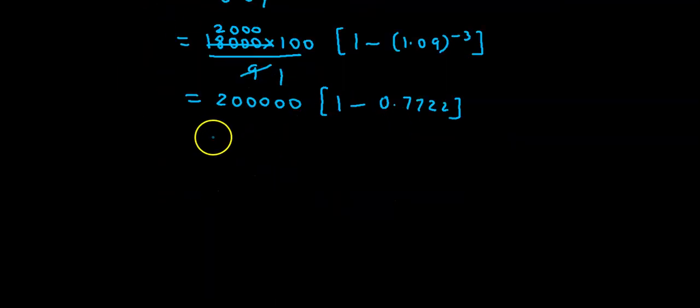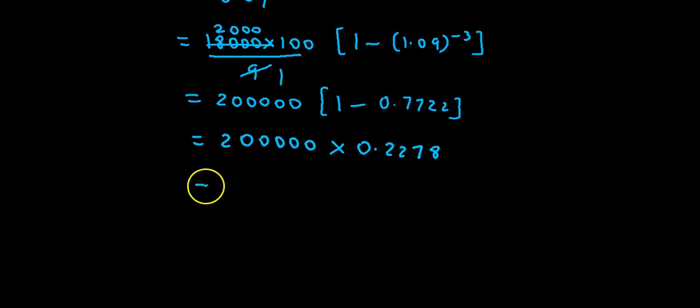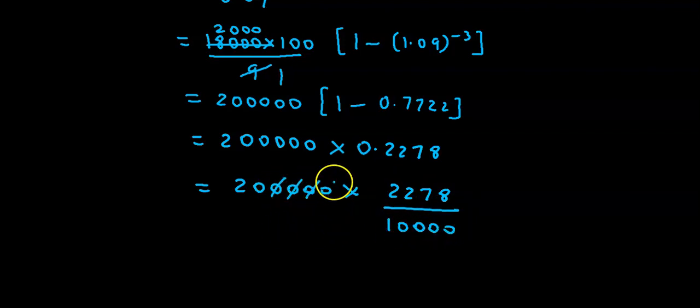Now we subtract this from 1, so we have 200,000 into the subtraction. 1 minus 0.7722 equals 0.2278. Now removing decimals, we get 200,000 into 2278 divided by 10,000. So we have 2278 multiplied by 20.